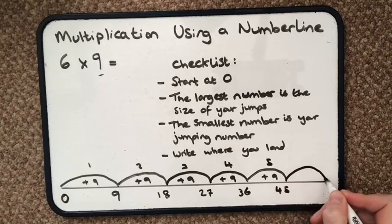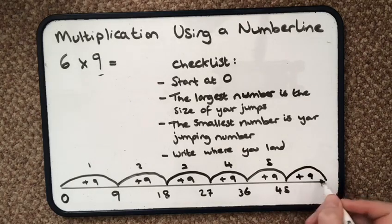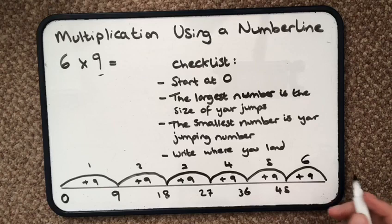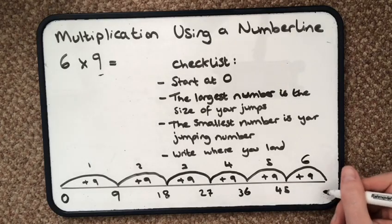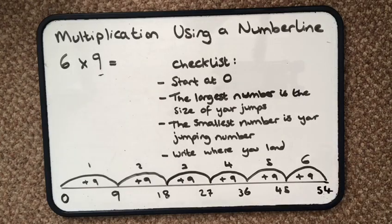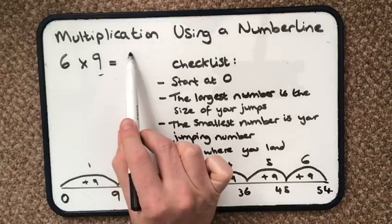And I've got my last jump, and you notice I write add 9 and I write the jumping number at the top, so I know how many times I've done it and I know when to stop. I'm going to land at 54. So my answer is 54.